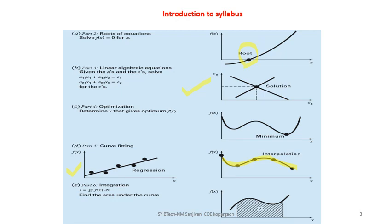In the chapter on numerical integration, we will learn how to find the area under a curve, which is important in many engineering phenomena — for example, finding the area under the stress-strain diagram to determine the toughness of a material, or the area under a PV diagram. Such problems are easily handled by numerical integration. We will also learn how to maximize or minimize functions in the chapter on optimization.